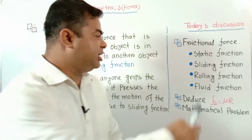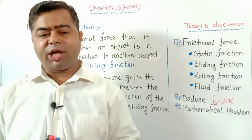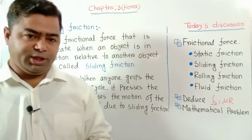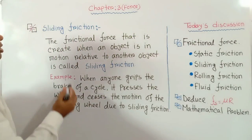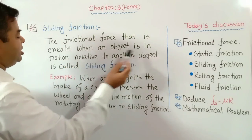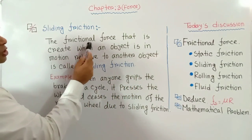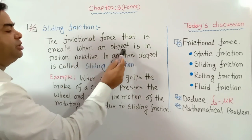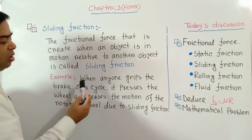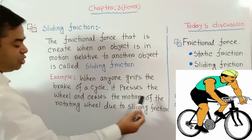Now we discuss about sliding friction. When you brake a cycle, it presses the wheel and tries to stop the motion of the rotating wheel — that happens due to sliding friction. The frictional force that is created when an object is in motion relative to another object is called sliding friction. For example, when anyone grips the brake of a cycle, it presses the wheel and seizes the motion of the rotating wheel due to sliding friction.